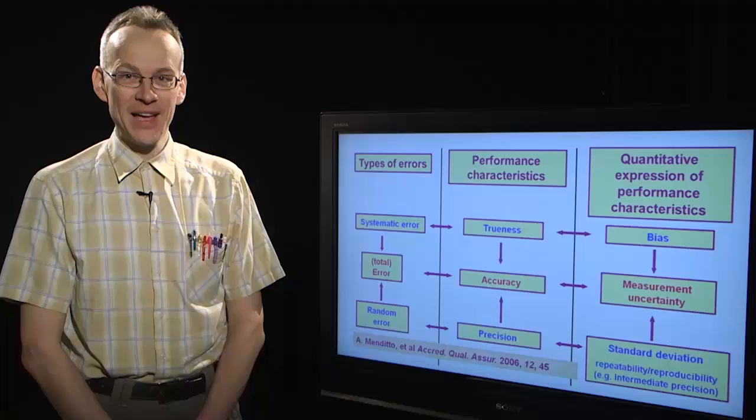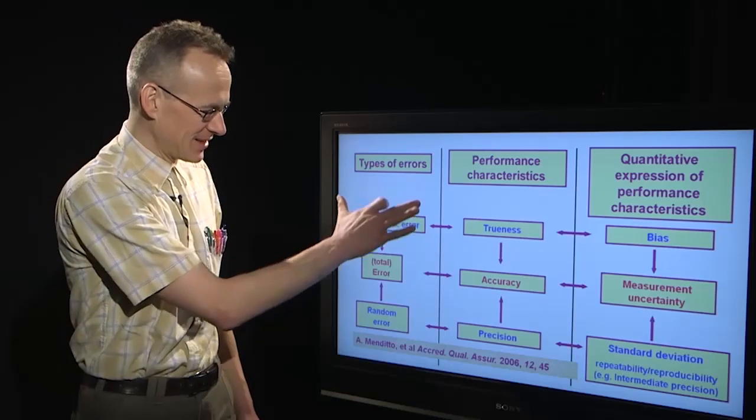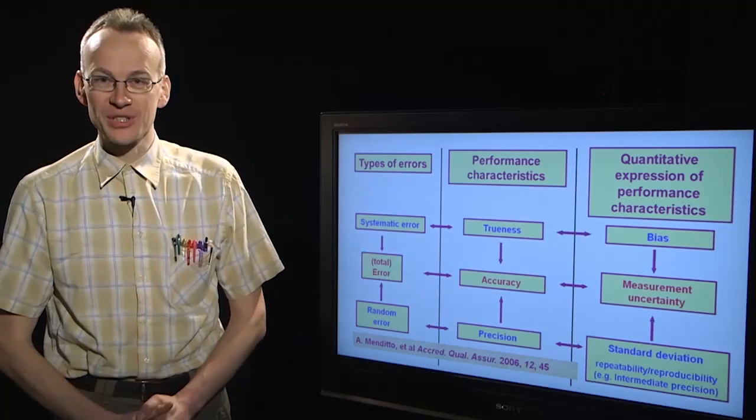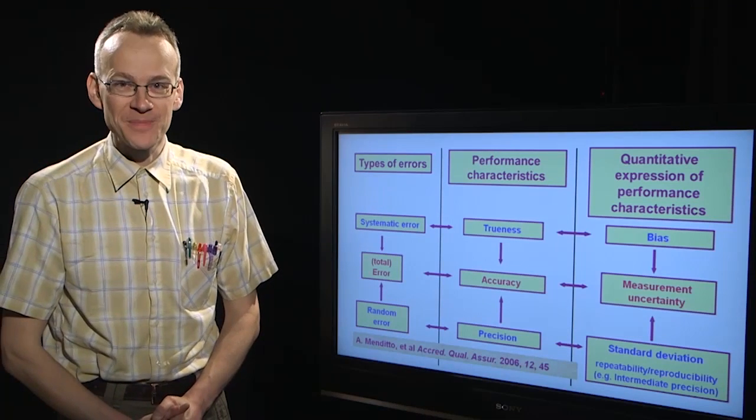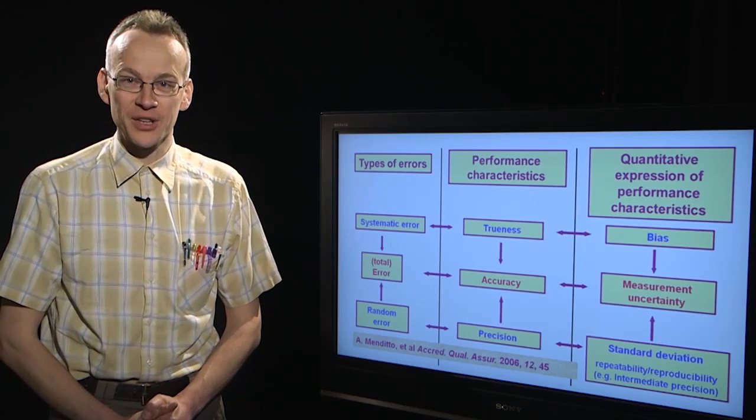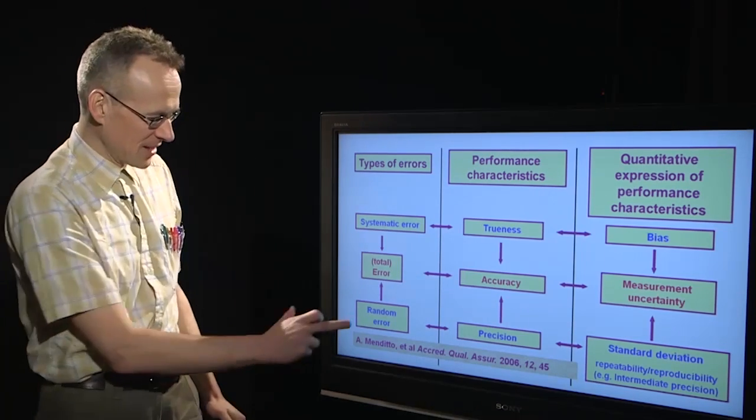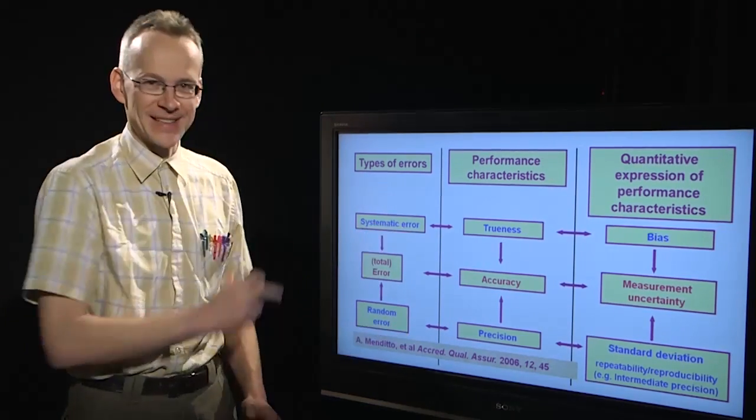Let us look at connections between accuracy, trueness, precision and related concepts. Measurements in general are affected by errors. In broad terms, there are two types of errors: random and systematic error.